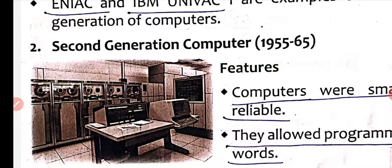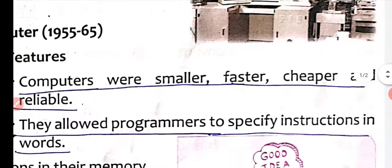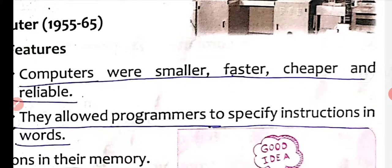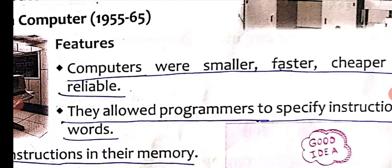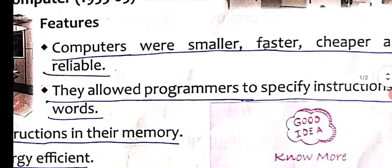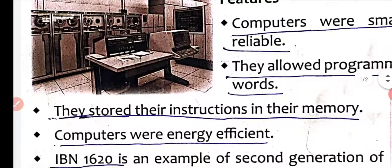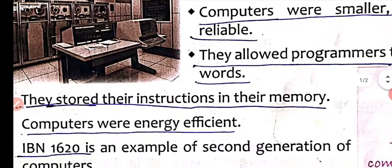Second generation computers have features that are smaller, faster, cheaper, and more reliable. They allowed programmers to write specific instructions in words. Program instructions are stored in memory.